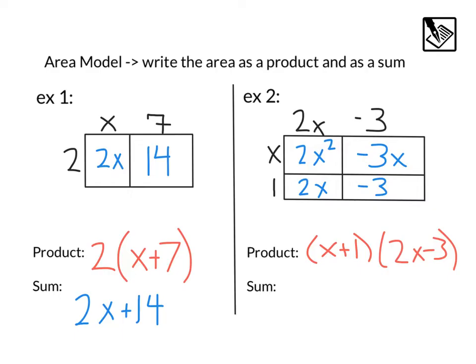Now if we wanted to find the sum, we want to add each of these rectangles together. Here we've got 2x squared, we're going to start with that. Then, I notice that we have a negative 3x and a 2x. Since those are like terms, we can combine those. Negative 3x plus 2x would be the same as minus 1x. And lastly, we have this negative 3, there's no like terms with that, so we can just tag that on to the end. Minus 3.